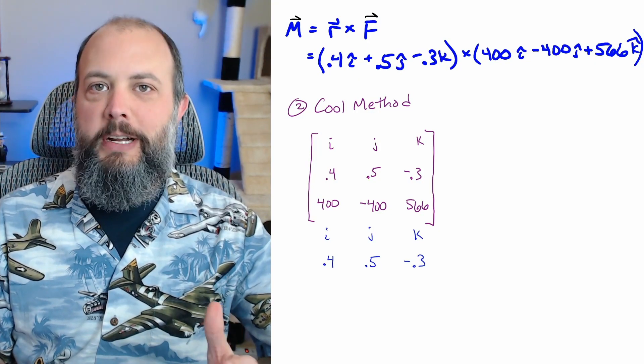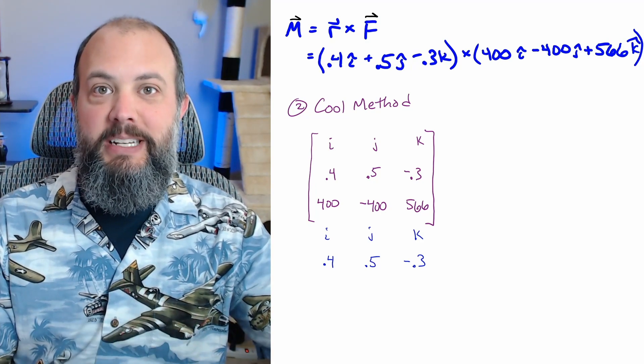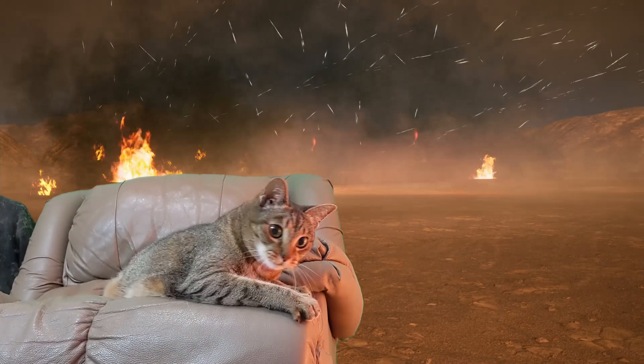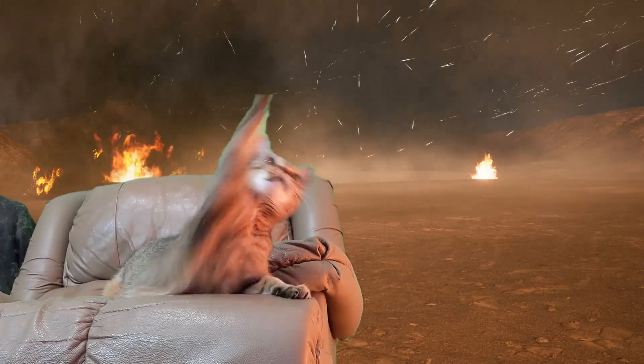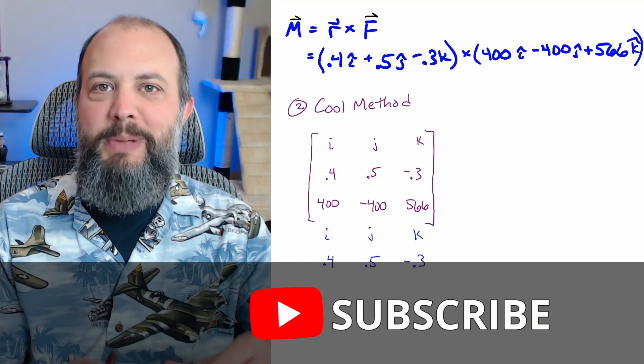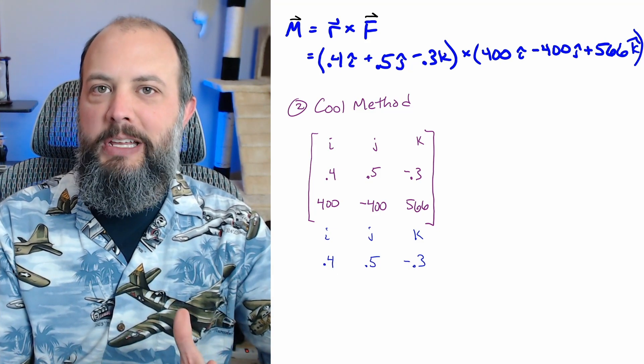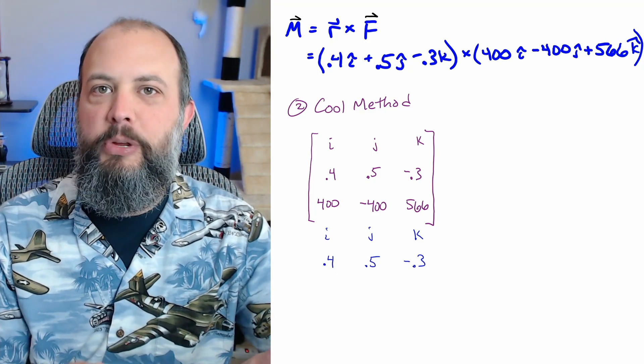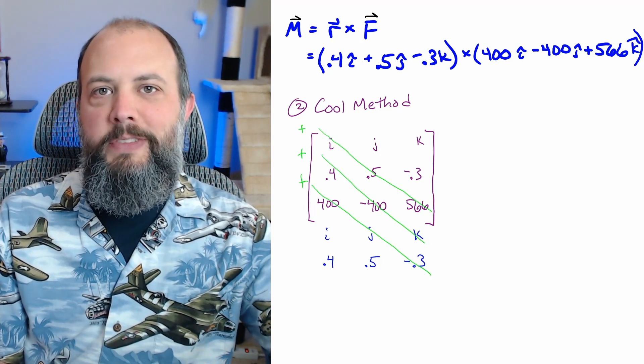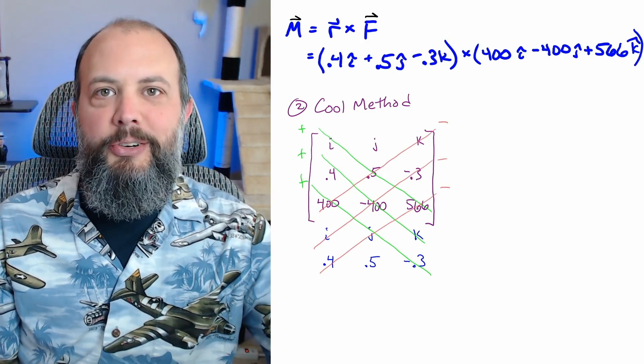The second way to do cross product I'll call the cool method because it avoids the possibility of making any sign mistakes. Everything's totally symmetrical. Being a hero doesn't make you cool. People become heroes because they're cool. You start off by making the three by three matrix as normal, but directly beneath it, you repeat the top two lines, so it ends up looking kind of like a five by three matrix. You then draw three diagonal lines and all of these lines will be added terms, and then these three diagonal lines will all be subtracted terms.